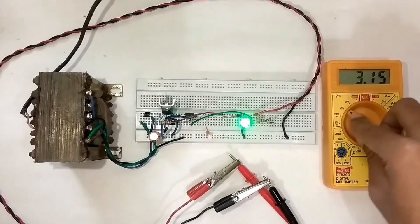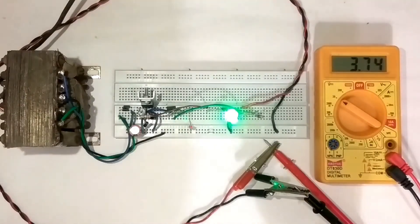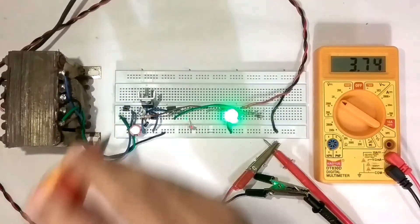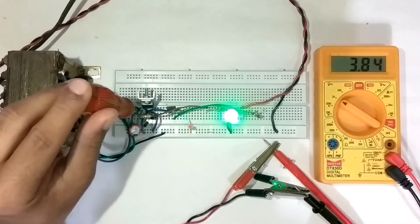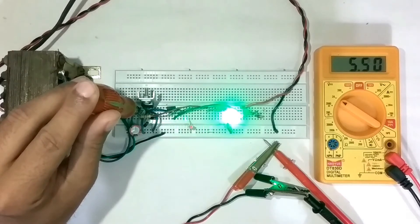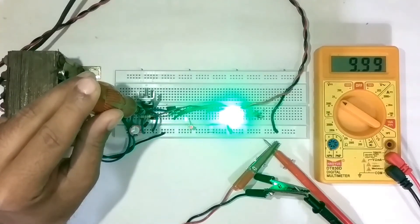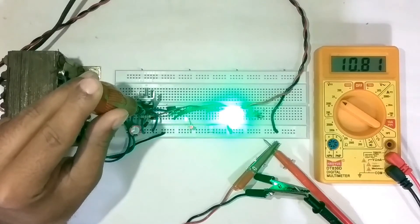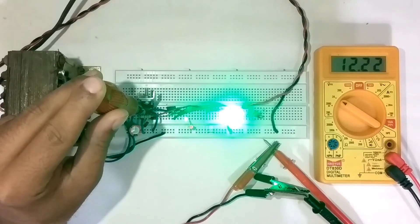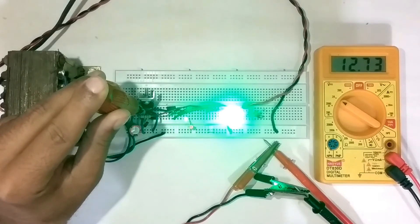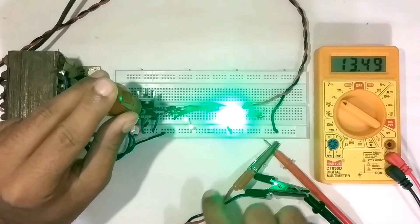I am setting it to 20 volt DC as the output will be below 20 volts. Now I am changing the wiper direction of the potentiometer clockwise to increase the voltage. See on the multimeter screen: 5 volts, 6 volts, 8 volts, 10 volts, 10.8, 12 volts, 12.8, 13 volts, 13.5 volts, and the red LED is glowing with its full brightness.